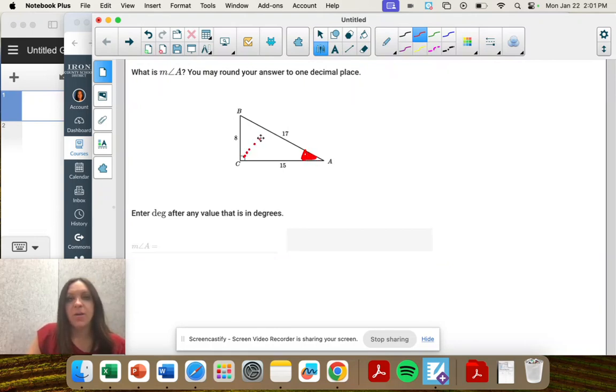We label all the sides. We have the hypotenuse and the opposite and the adjacent.